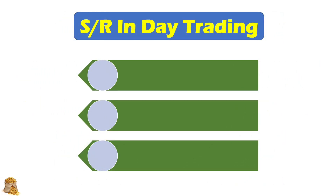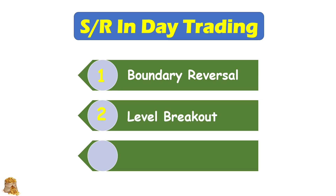Now let's move on to the second part — how to use support and resistance in day trading. There are mainly three ways. Number one, we can trade the level boundary reversal. Number two, we can trade the level breakout. Number three, the support and resistance levels can serve as the profit target.